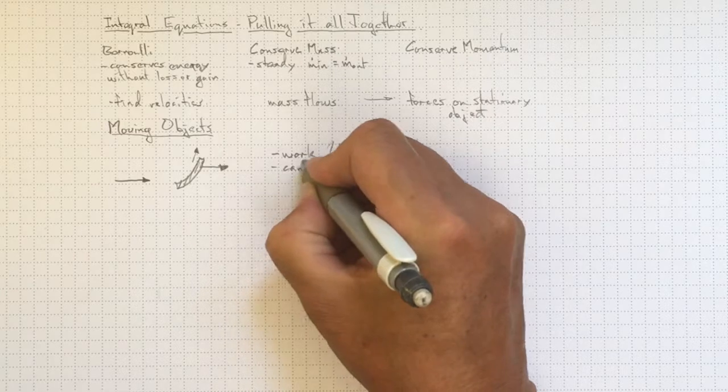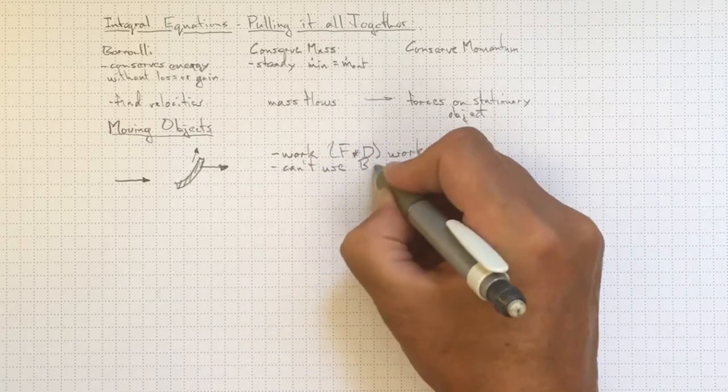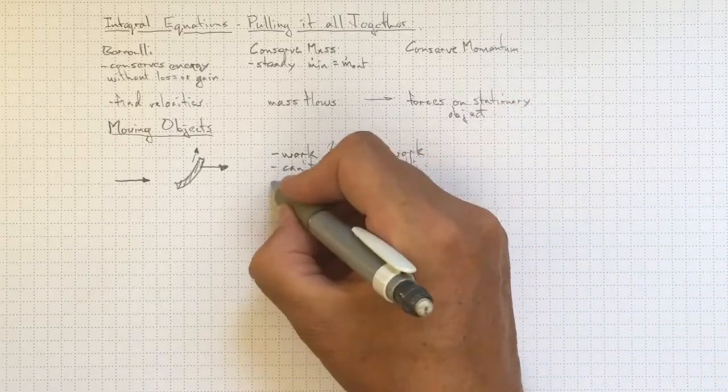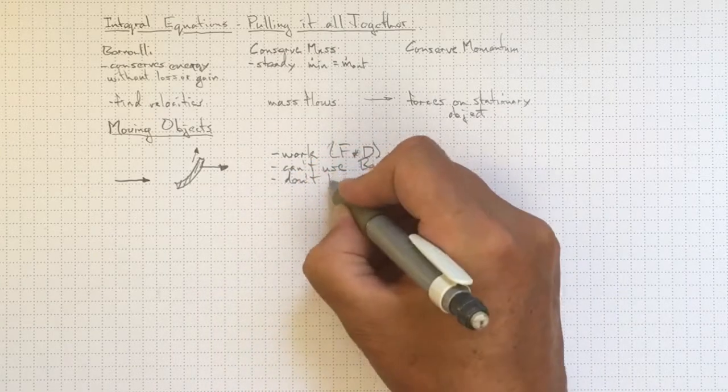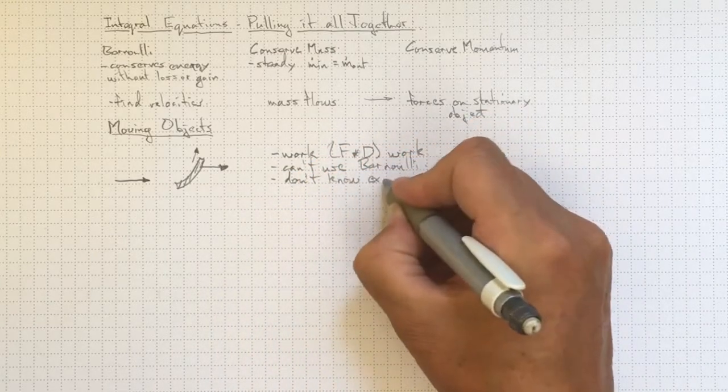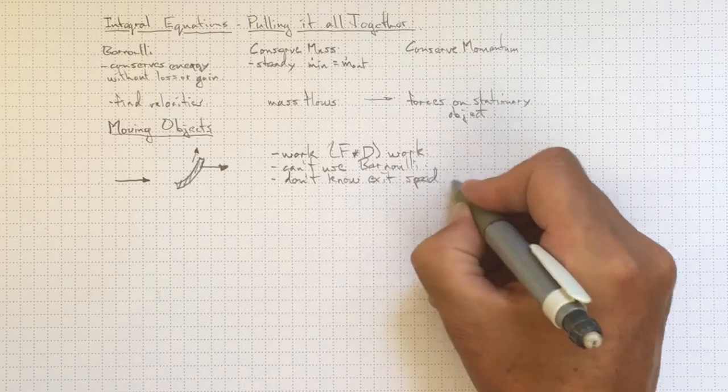It's force times displacement work. So we can't use Bernoulli, at least not directly. And we don't know, therefore, what the exit speed is or the direction.